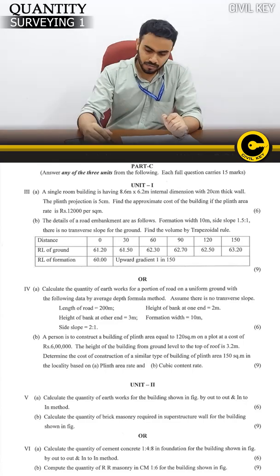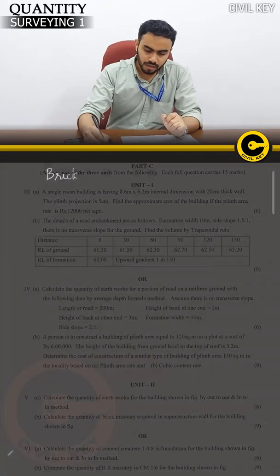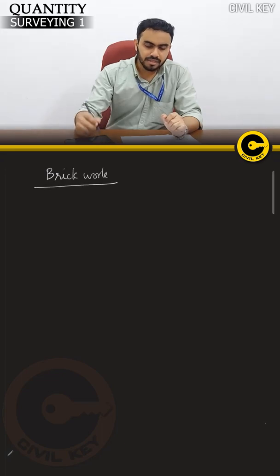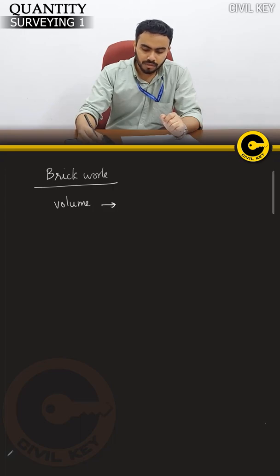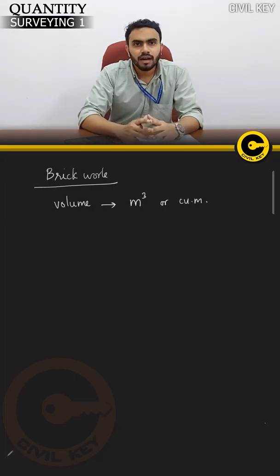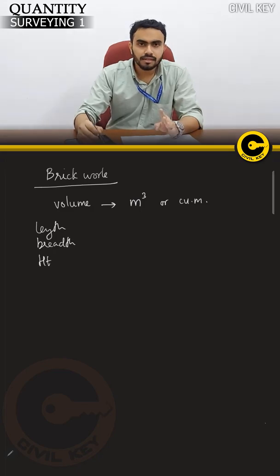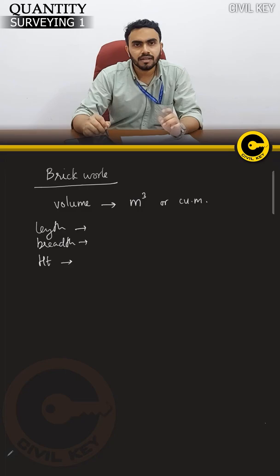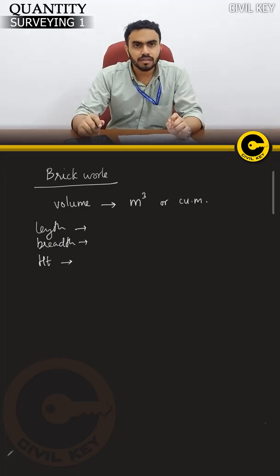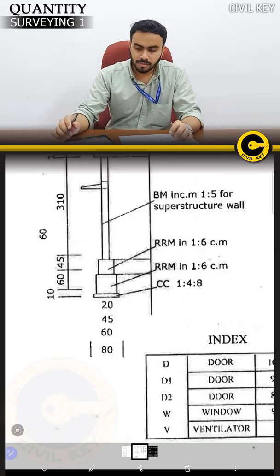Let's start. Basically, the volume is calculated in cubic meters. Volume equals length times height times depth. If you look at a section, the wall has a total height.